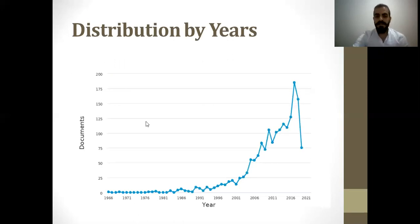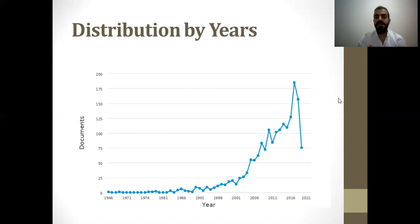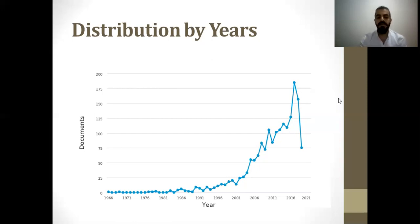Regarding distribution by years, although the history of this production model dates back to the construction of the Suez Canal in 1859, the real body of evidence is based on the last 15 years. The systematic review of this study includes studies published up to the beginning of June 2019.